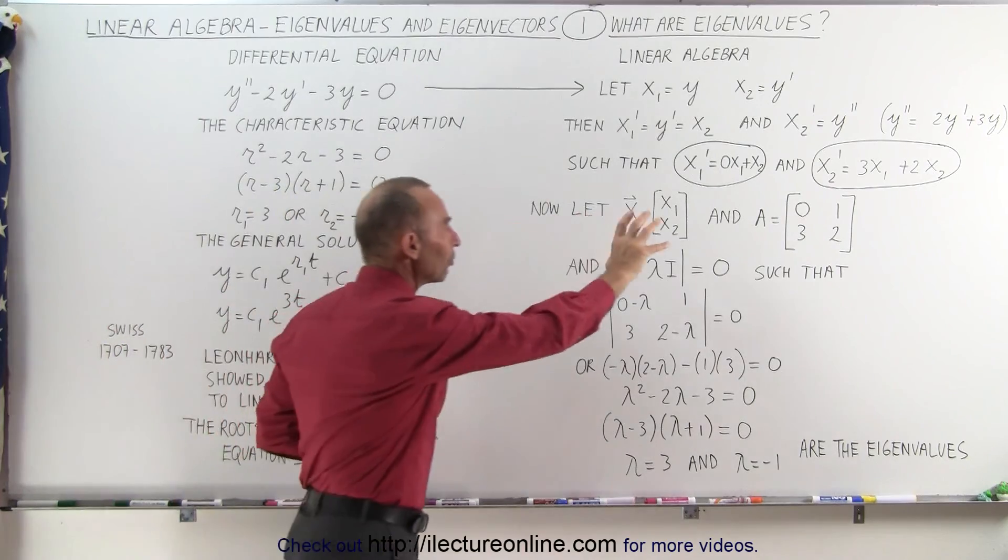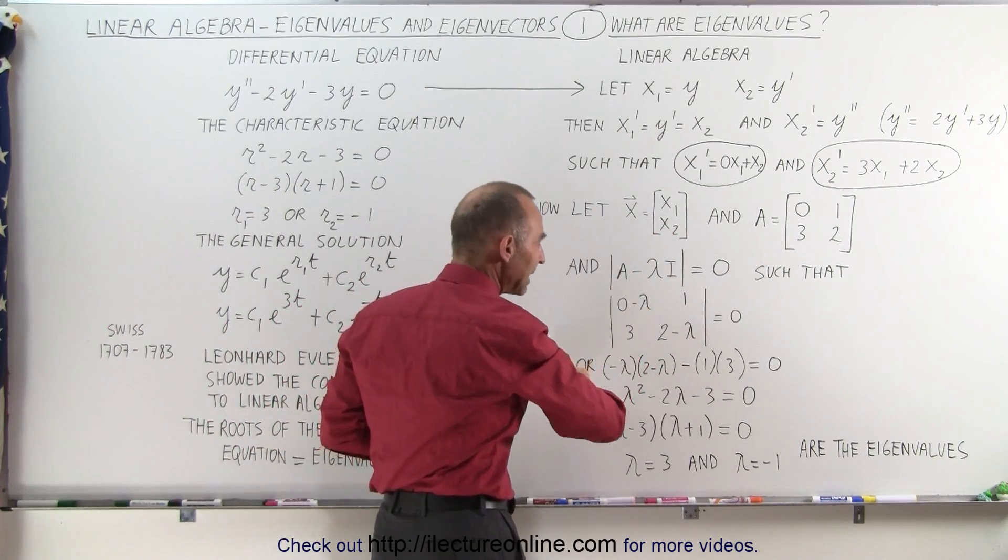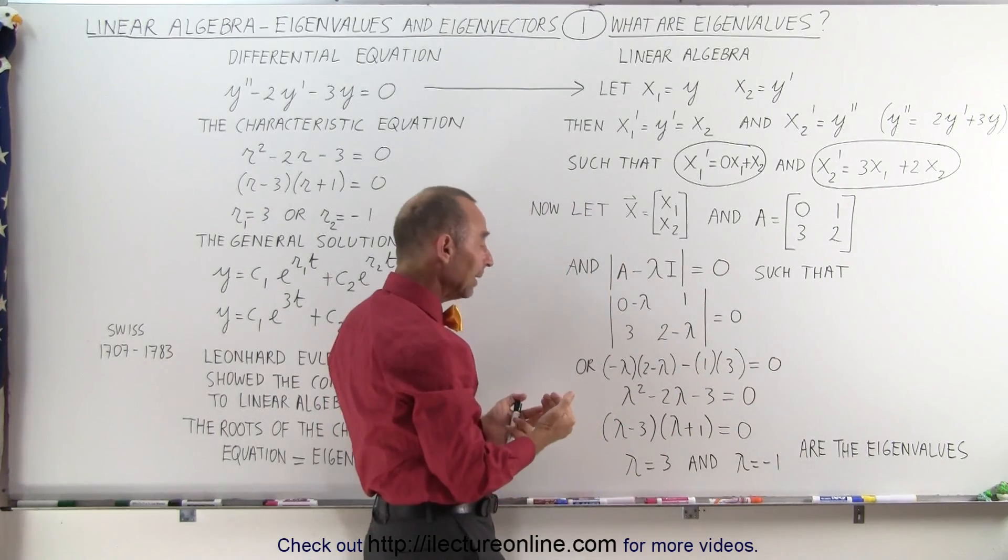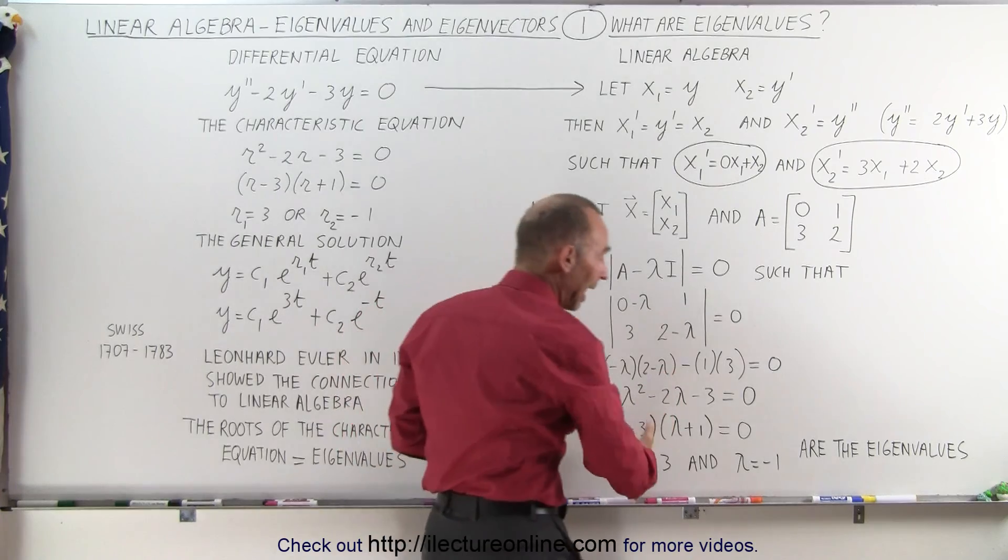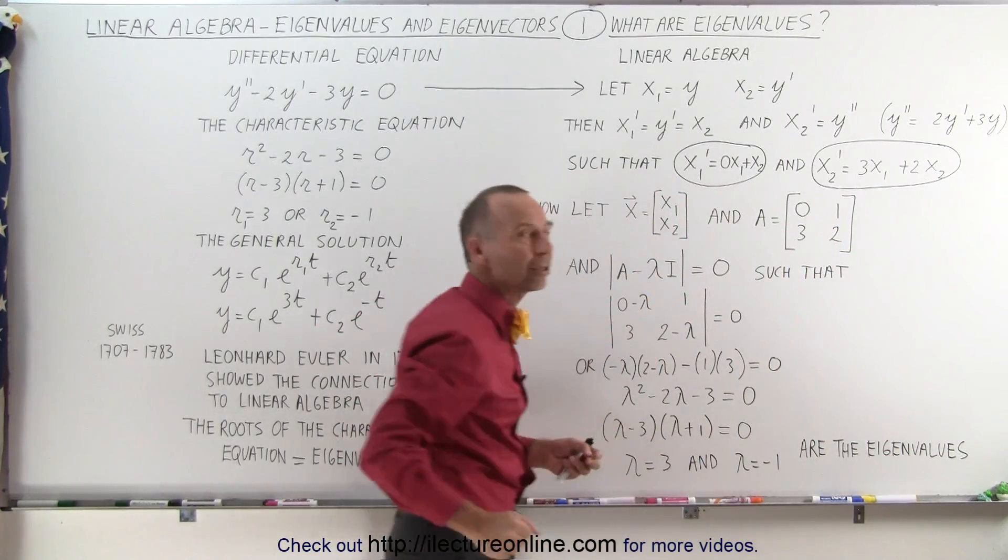So Euler realized that he was able to find a way to turn this into a matrix format, and then using the determinant of this, coming up with the characteristic equation in terms of lambda. And then he said, well, lambda is then what we call the eigenvalue of this particular matrix.